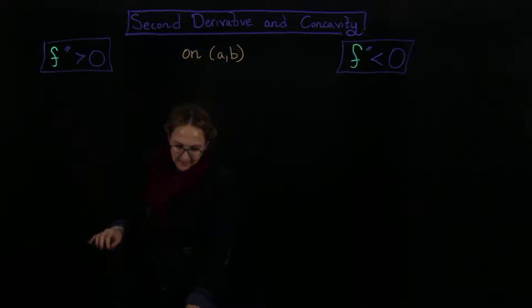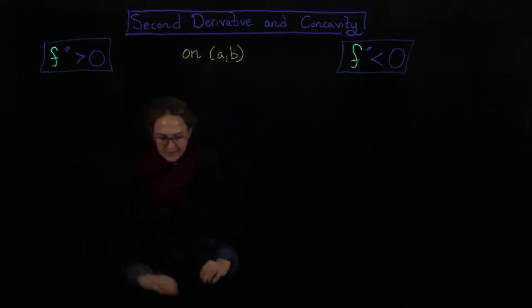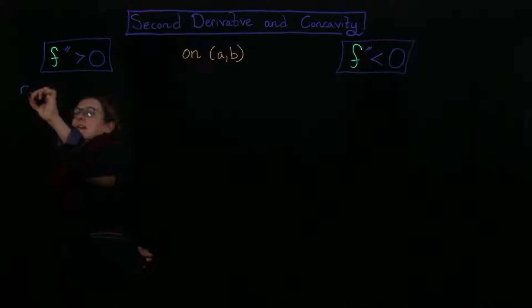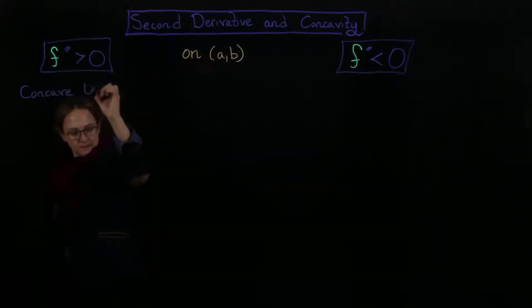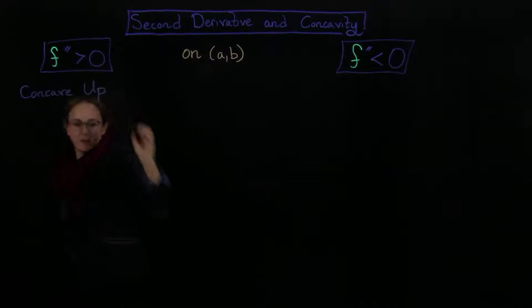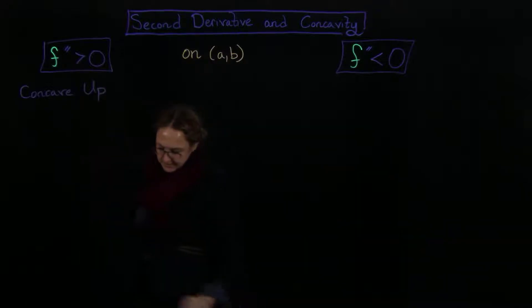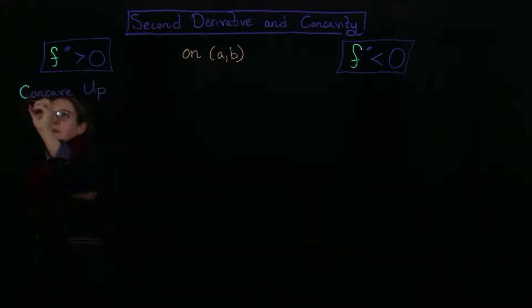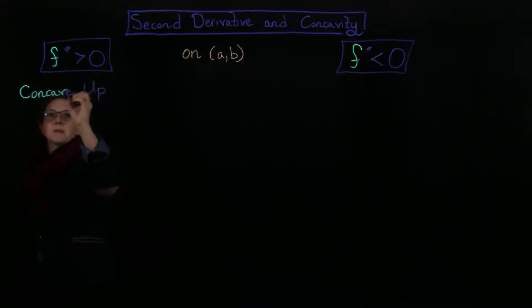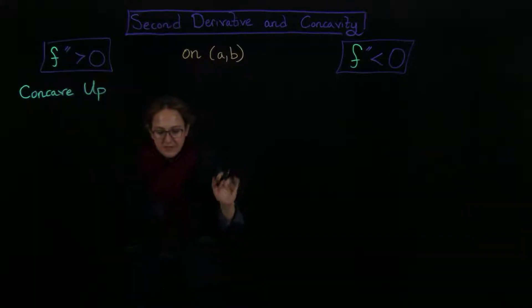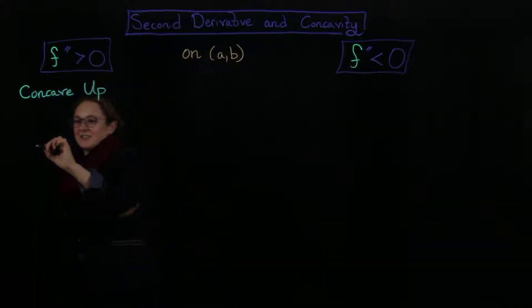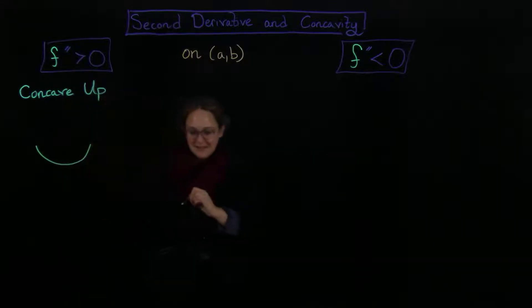So what happens when we have f'' > 0? This is a concave up situation — the graph of f is concave up. I like to picture that concave up is like a smiley face.